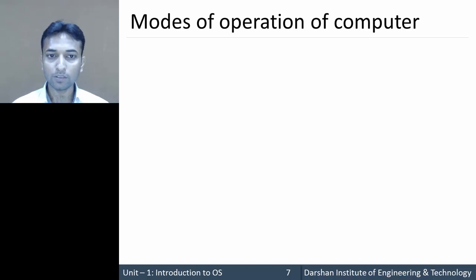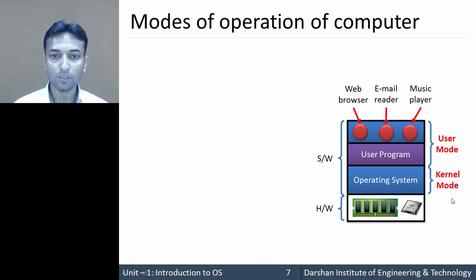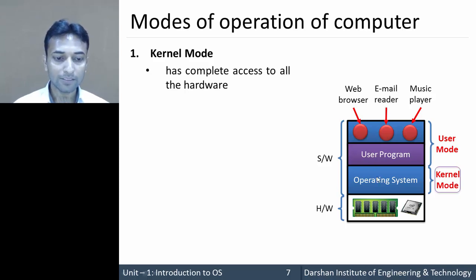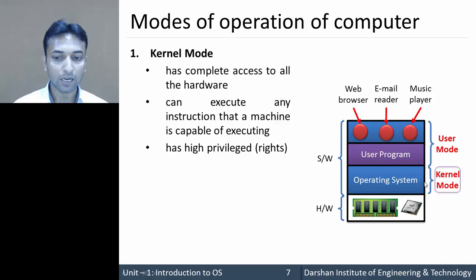Now let us move further to the different modes of operation of a computer. In this architecture, the software portion is divided into two parts: the first is user mode and the second is kernel mode. Every computer has these two different modes of operation. The program that runs in kernel mode has complete access to all hardware resources and can execute any instruction the machine is capable of executing. This mode has high privilege — full rights to access any part of the system.